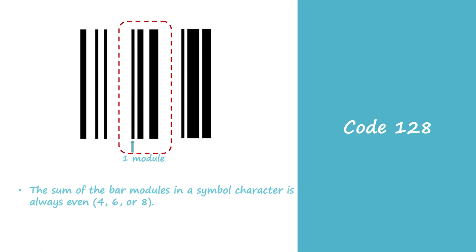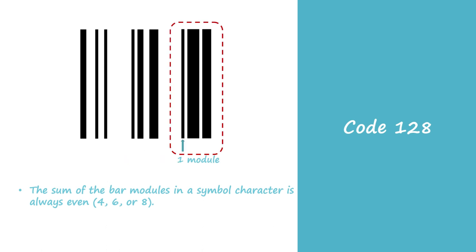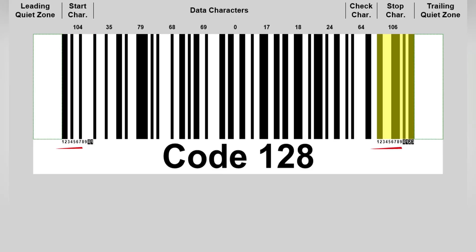For another sample symbol character, the first bar element has one module, the second has two modules, and the last has three modules, so the total bar elements have six modules. For yet another sample symbol character, the first bar element has one module, the second has four modules, and the last has three modules, so the total bar elements have eight modules. Additionally, the stop character contains an additional bar element two modules wide at the end.